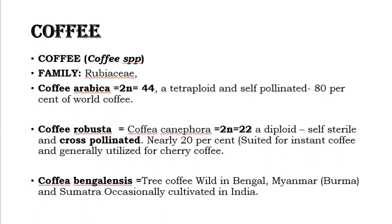The second species is Coffee robusta, also known as Coffee canephora. Its chromosome number is 2n equal to 22; it is a diploid species, self-sterile and cross-pollinated. It accounts for nearly 20% of the world's coffee and is suited for instant coffee and generally utilized for cherry coffee.